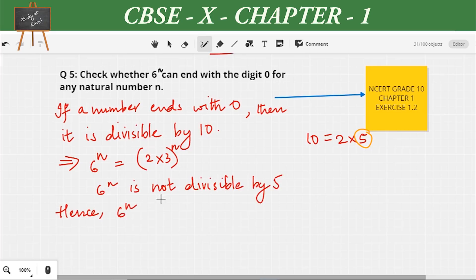Hence we can say that 6^n cannot end with a digit 0 for any natural number n.